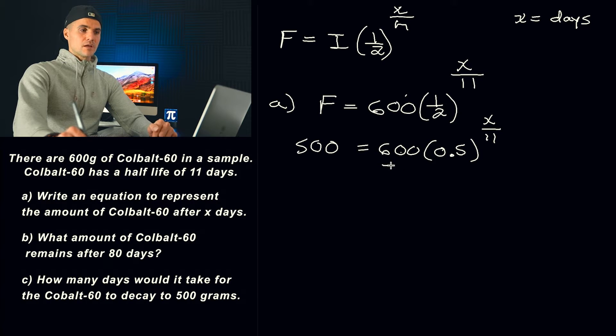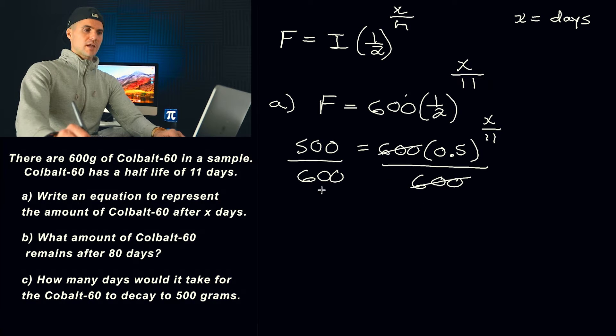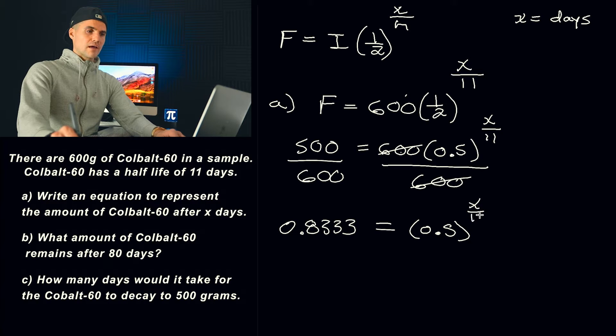What we have to do is we have to basically solve for this x value. So the first thing we want to do is we want to bring the 600 over. The way to do that is we would have to divide both sides by 600. So then the 600s here would cancel out. 500 divided by 600 gives us approximately 0.8333 repeating. And then we got 0.5 to the power of x over 11.